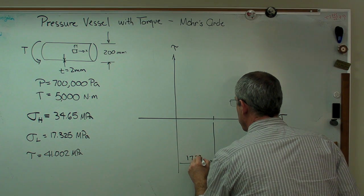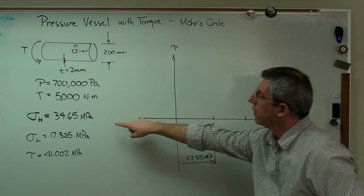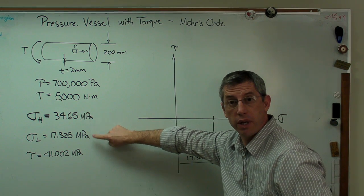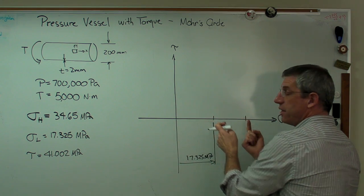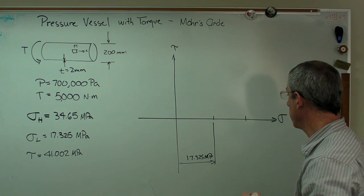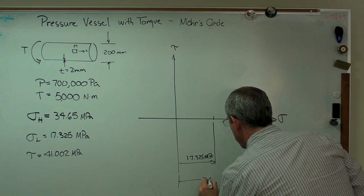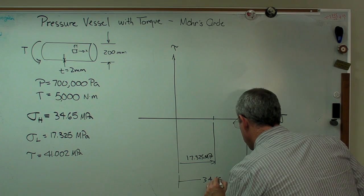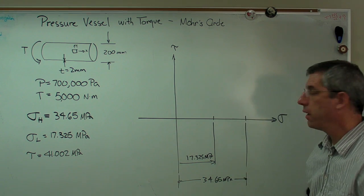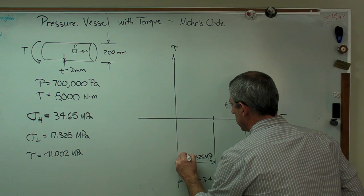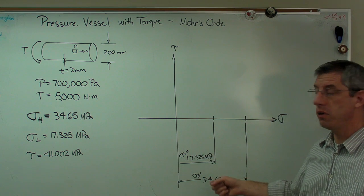But that's 17.325 megapascals. Now, since I know that the hoop stress is twice the longitudinal stress, I know that this has to be half of that or that this distance here and that distance here have to be the same. So I'm going to use that. And this has to be 34.65. So there you go. There's sigma x and there's sigma y, which is also the longitudinal and the hoop stress.